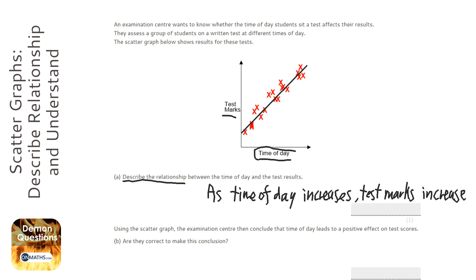When you're describing the relationship, it's just 'as the one at the bottom increases, the one up the side either increases or decreases.'